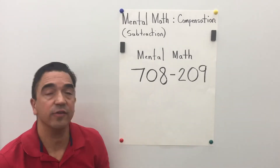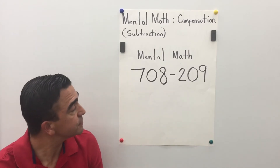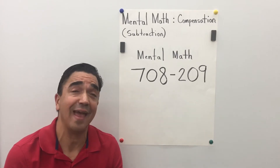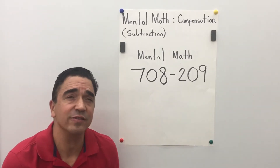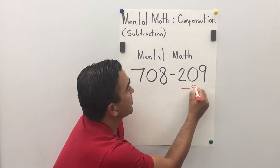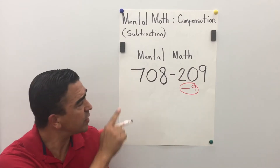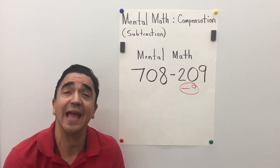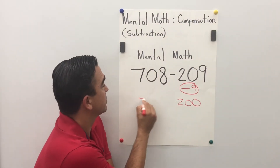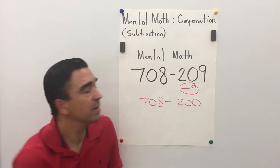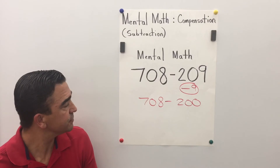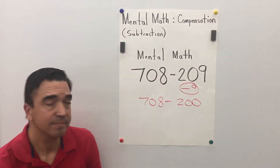708 minus 209. As a mathematician, I like to solve things in tens and hundreds. Let's subtract 9 from 209. When I subtract 9 from 209, I get 200. So now we have 708 minus 200, which equals 508.